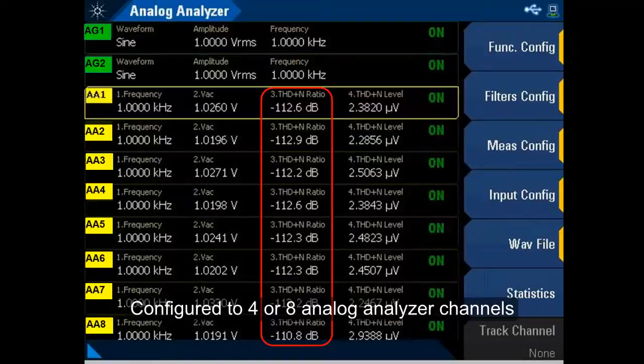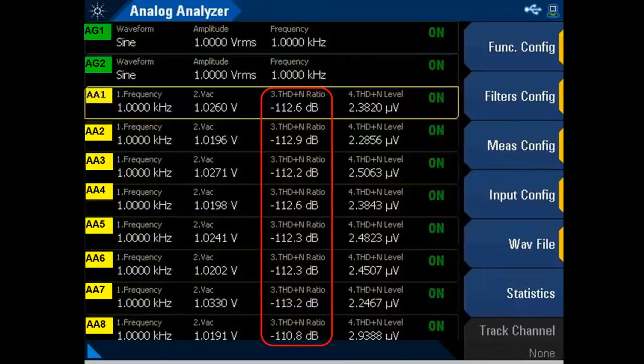The instrument is capable of simultaneous measurement on all channels, making the U8903B the ideal choice for a multi-channel system such as 5.1 or 7.1 surround sound.